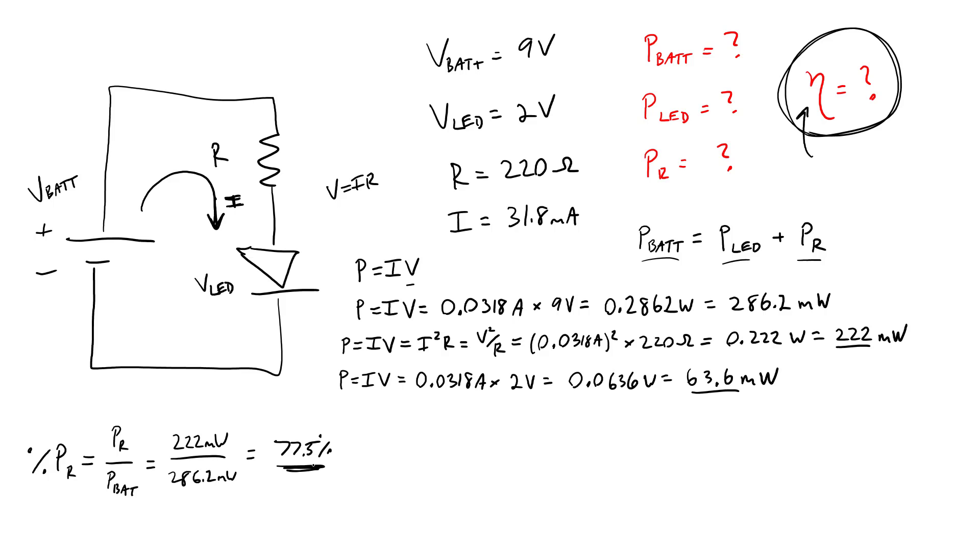So more than three quarters of the power in this circuit is dissipated by the resistor instead of being delivered to the LED. So we can already tell that this isn't a very efficient circuit, and we are having a lot of waste heat in that resistor.